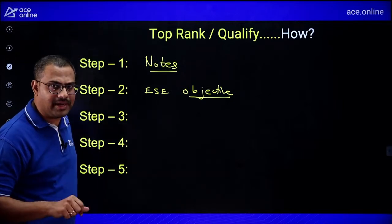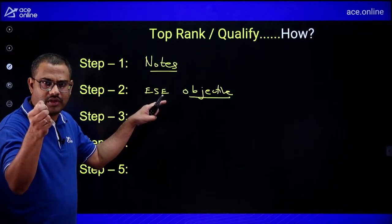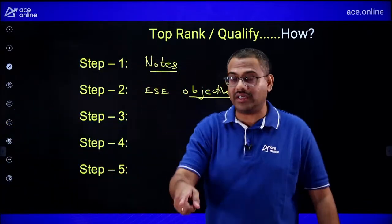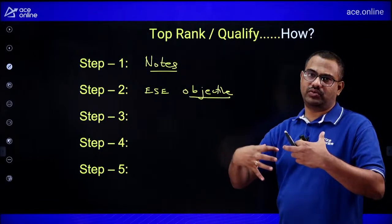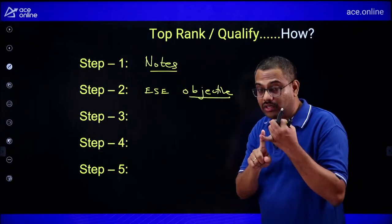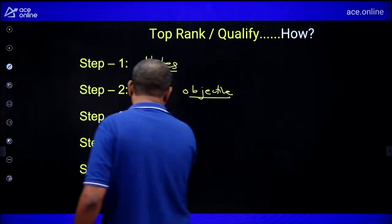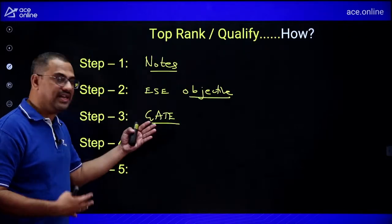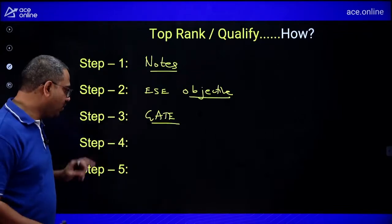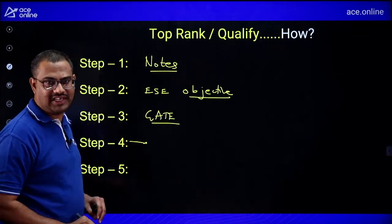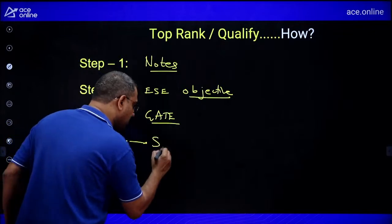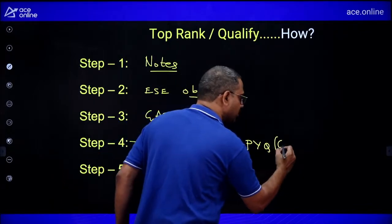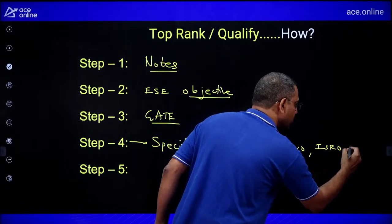Step 3: Solve previous GATE question papers — all 30 years of EE, ECE, and Instrumentation question papers. These develop depth in knowledge and mathematical accuracy. Step 4: Only when a specific notification arrives — GENCO, ISRO, DRDO — then study those specific exam's previous year papers. But Steps 1, 2, and 3 are the foundation common to all engineering competitive exams. By the time the notification comes, these three steps should already be complete.